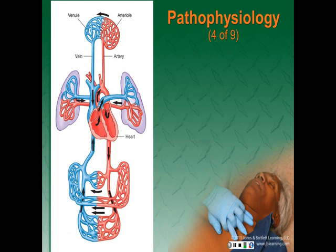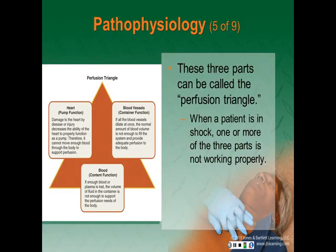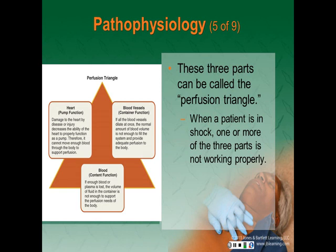These three parts can be called the perfusion triangle. When a patient is in shock, one or more of the three parts are not working properly. Damage to the heart by any type of disease or injury decreases the ability of the heart to function as the pump, so it doesn't move enough blood through the body to support perfusion of tissues. If all of your vessels dilate at once, the normal amount of blood volume is not enough to fill the container and provide adequate perfusion. And if you do not have enough blood or plasma, or you lose a lot, volume is decreased and there's not enough to support the body's needs for perfusion.